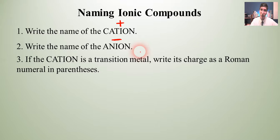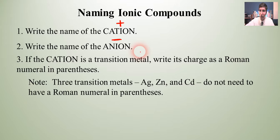Usually that's all you have to do. A lot of the times you just write the cation and the anion and be done with it. But sometimes we have transition metals in there. If the cation is a transition metal, that means it's one of those elements in groups three through twelve, you need to write its charge as a Roman numeral in parentheses, which means you have to figure out what its charge is. We'll talk about how to do that here in a few minutes. Now there are a couple exceptions to this rule. There are three transition metals, silver, zinc, and cadmium, that don't need to have the Roman numeral in parentheses.